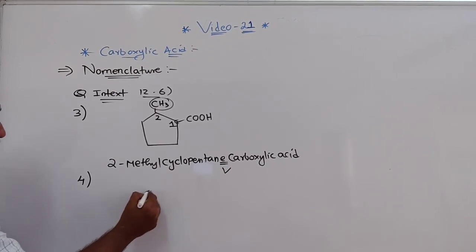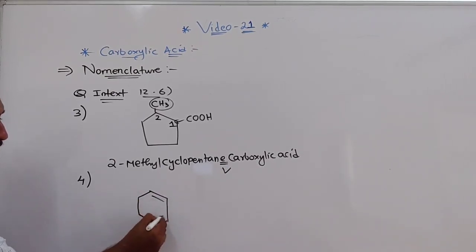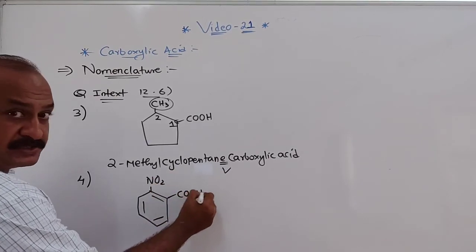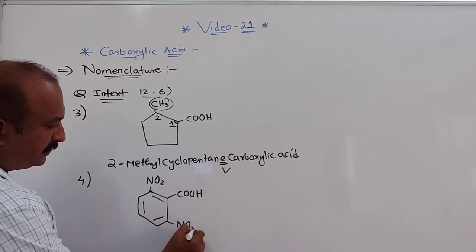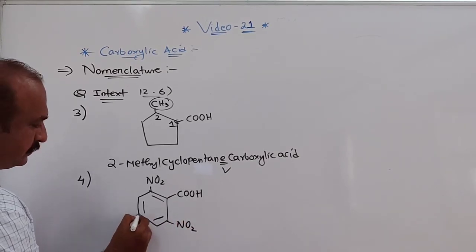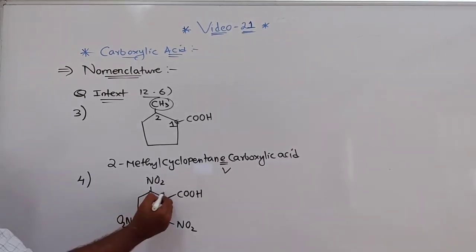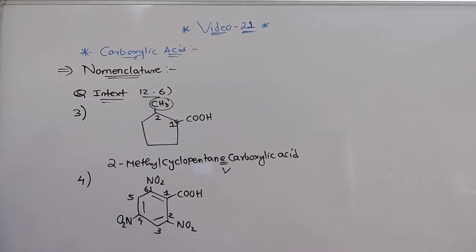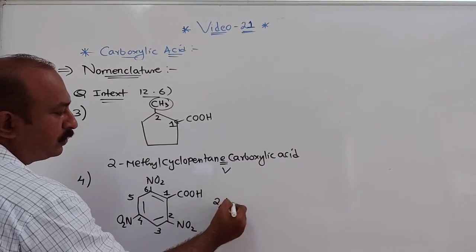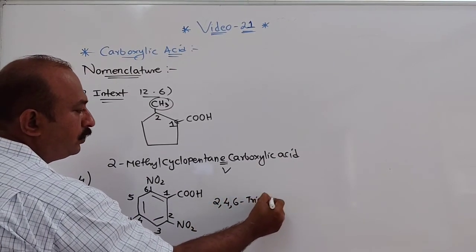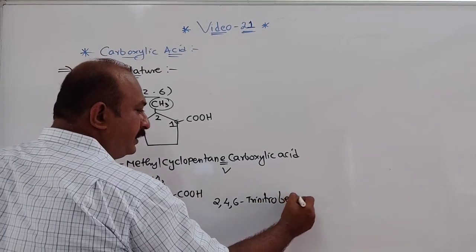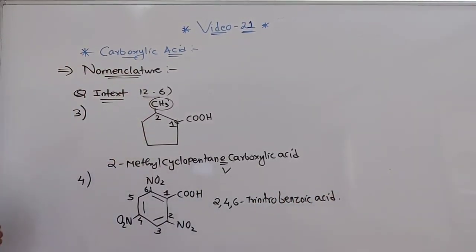The fourth structure has a benzene ring with NO2 groups at positions 2, 4, and 6, and a COOH group. Numbering from position 1 as the COOH carbon, NO2 groups are at 2, 4, and 6. So the IUPAC name is 2,4,6-trinitrobenzoic acid.